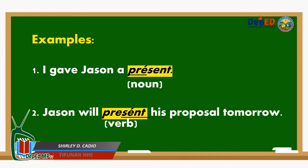For example: 'I gave Jason a present.' / 'Jason will present his proposal tomorrow.' In the first sentence, 'I gave Jason a present,' the stressed syllable is 'preh,' making it a noun — 'present,' which means a gift. In sentence number 2, 'Jason will present his proposal tomorrow,' the stressed syllable is 'sent' — 'present,' which means it is a verb.